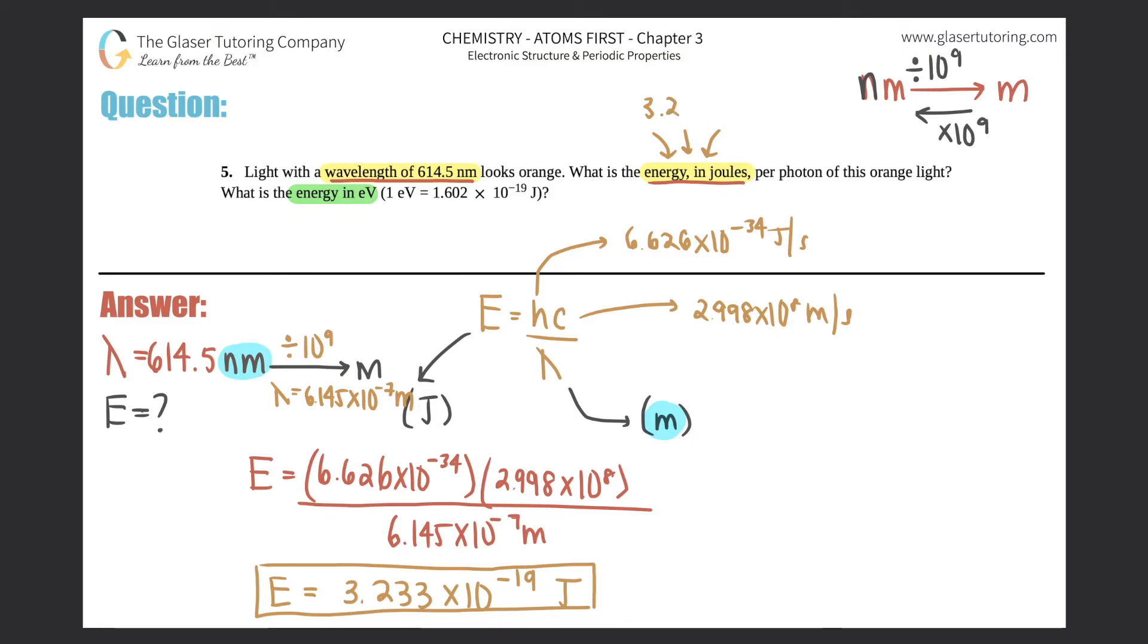Now they just want the question to be: what is the energy in eV? eV stands for electron volt, but they gave us a cool conversion here. One electron volt equals 1.602 times 10 to the negative 19th joules. So it looks like if I could just branch this off now, I can just convert the joule information that I have into electron volt because I have this conversion factor. And where am I going to get the joules from? Oh, it's right here, the answer that I got. So basically what I have to do is I just have to take 3.233 times 10 to the negative 19th joules and I just have to convert it to electron volt.